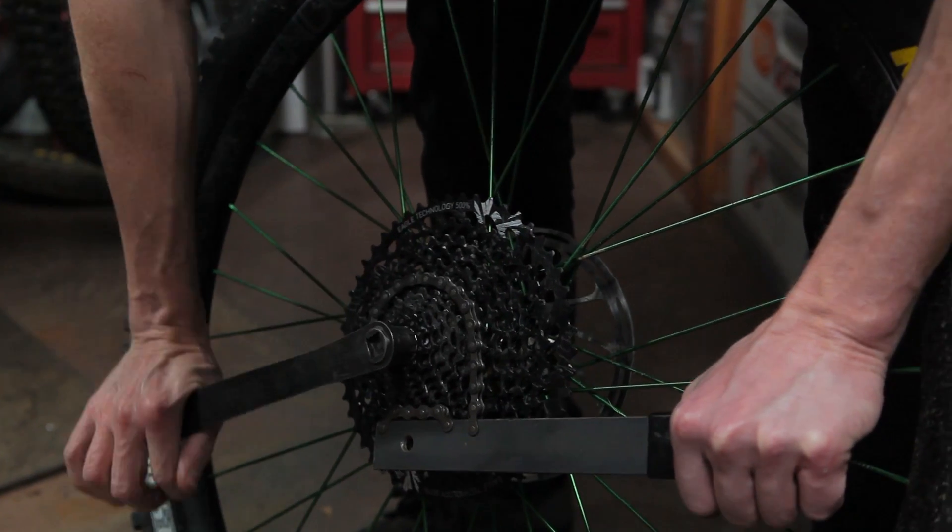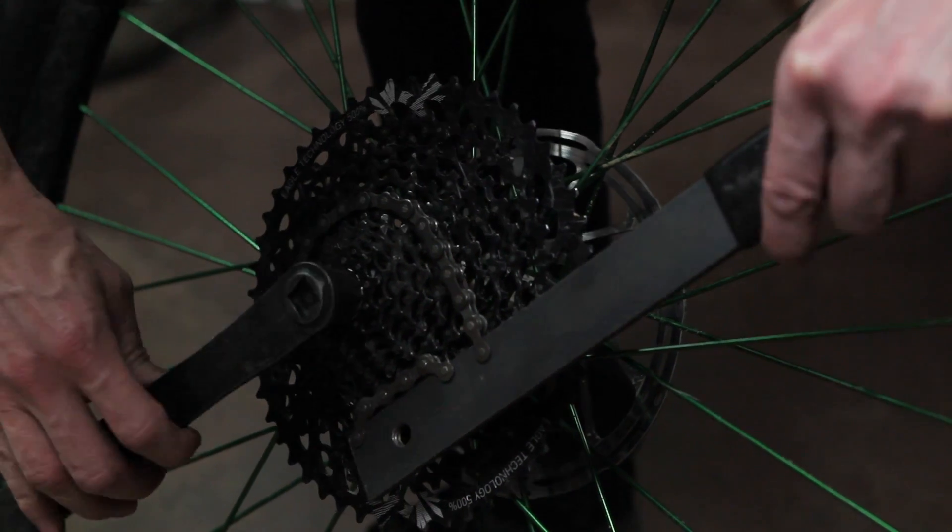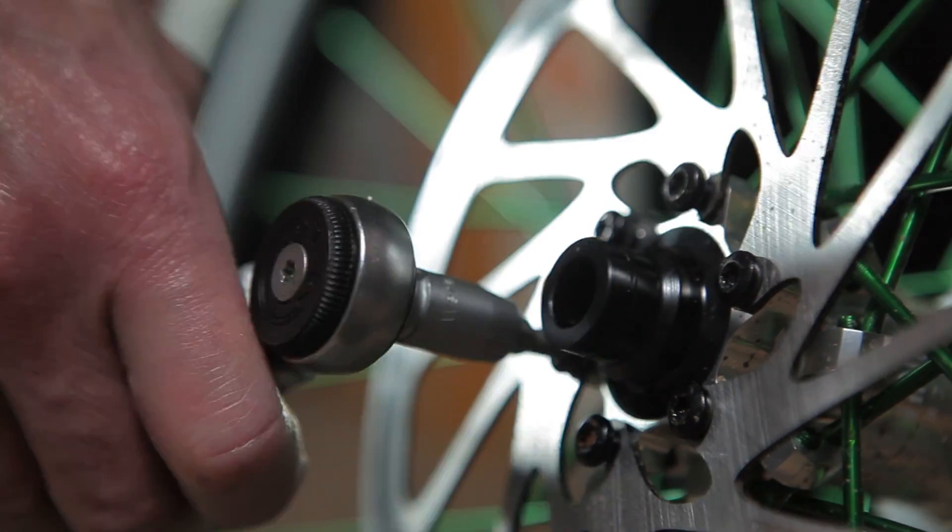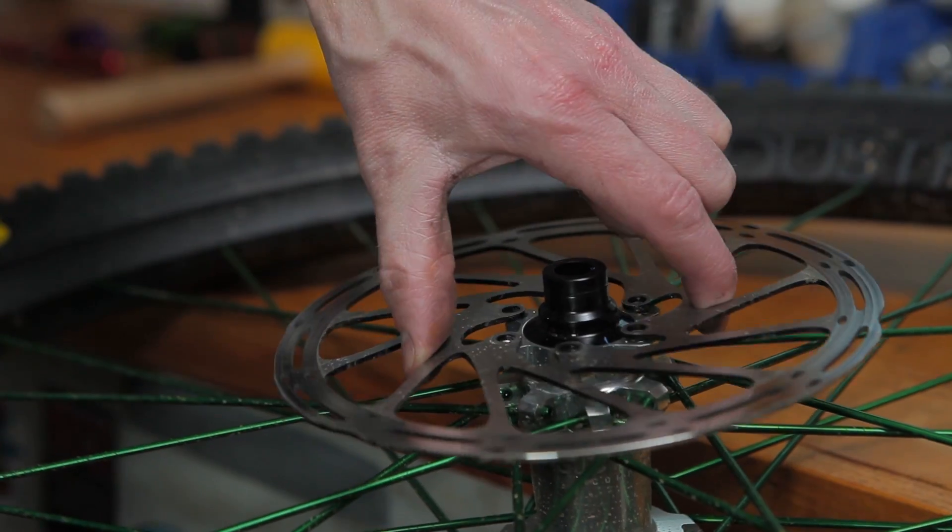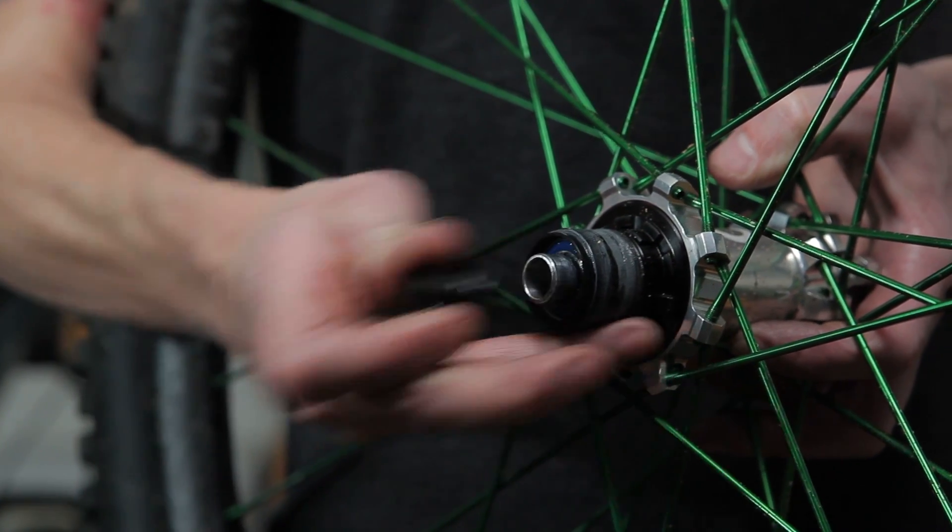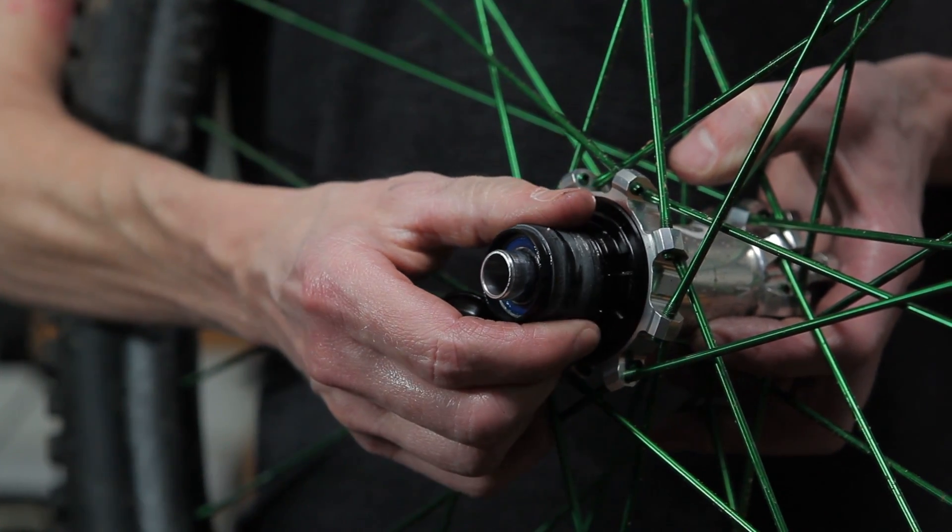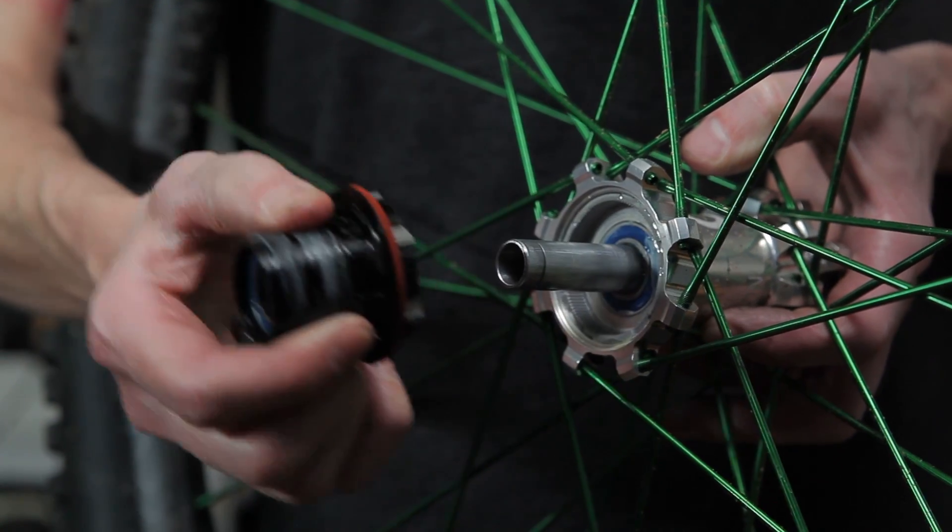For a complete service with bearing replacement, you'll need to remove the cassette and rotor. No tools are necessary to remove the end caps. With the end cap removed, the freehub body will slide directly off the axle.